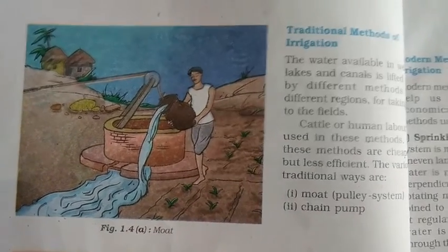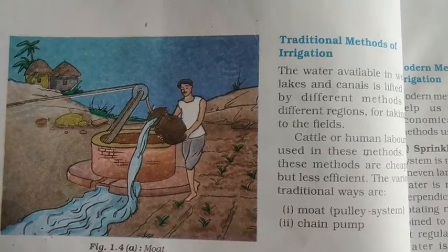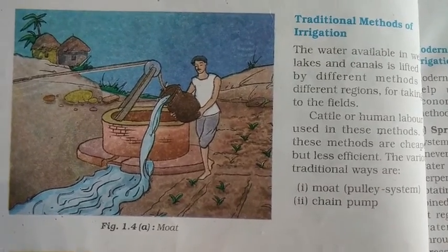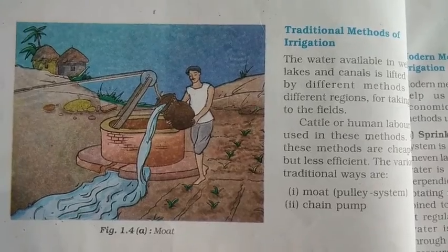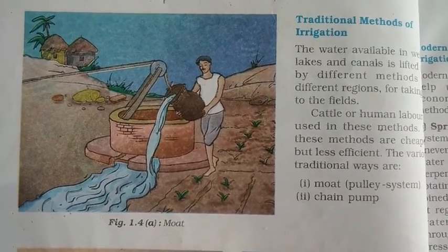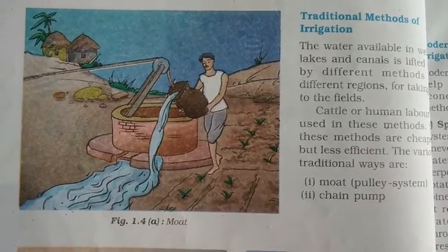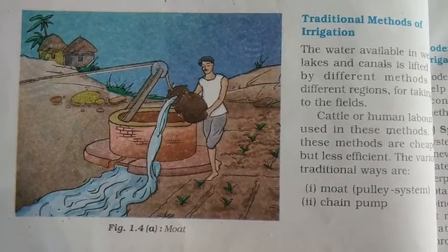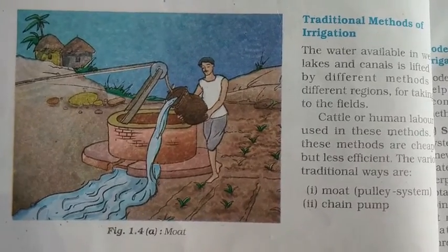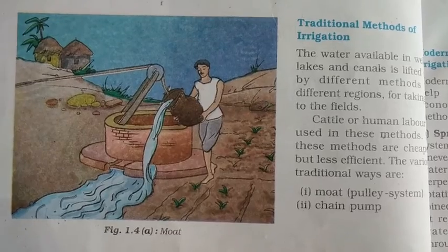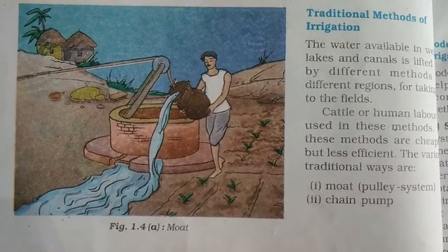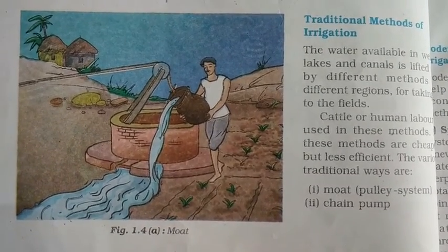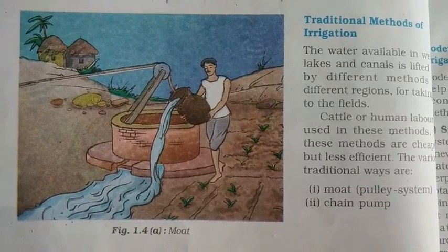Welcome to NIRS Education. We are discussing the concept of irrigation, which is an agricultural practice. To get a good yield, we have to grow crops in the proper manner, which means supplying water to the crops at different intervals and at the proper time. That supply of water to crops at different intervals is called irrigation.